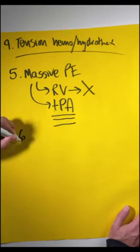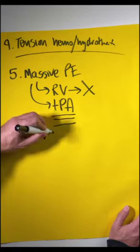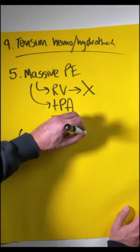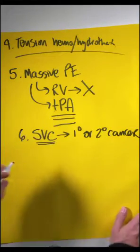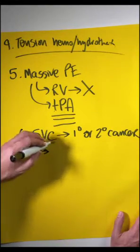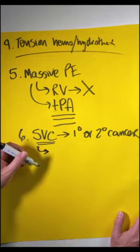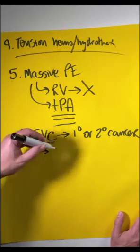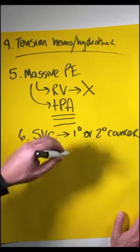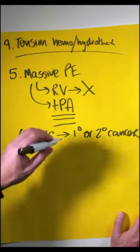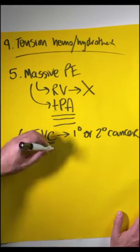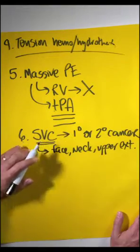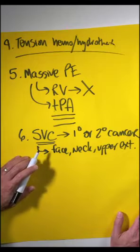The next cause of obstructive shock is SVC syndrome, superior vena cava syndrome, which can happen as a primary or metastatic disease from cancer. The SVC can't dump blood into the right atrium and the right ventricle because there's a cancer burden that is obstructing flow whether extrinsically or intrinsically to that vessel. Patients will have plethora of their face, their neck, their upper extremities and this is an emergency when these patients present.